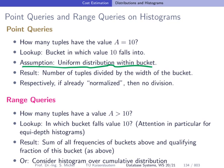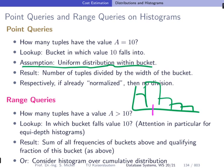For range queries it is a bit more complex. If you have a query like 'a strictly greater than 10', you need values 11, 12, and so on. You identify which bucket 11 falls into, then sum up the frequencies of that bucket and all following buckets. For the first bucket containing 11, you take only the portion corresponding to values 11 and above, disregarding values like 10, 9, etc. So only a fraction of that first bucket's frequency mass is counted.